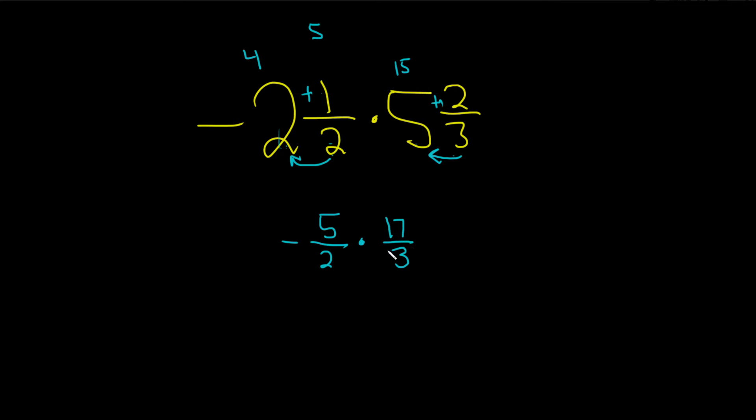And now we're ready to actually multiply. I don't think anything simplifies. You can't simplify the 5 and the 2. You can't do anything with these. You can't do anything with the ones that are diagonal. We're pretty much out of luck.